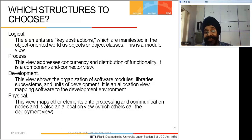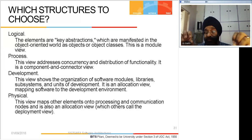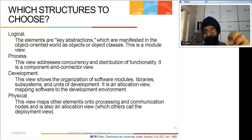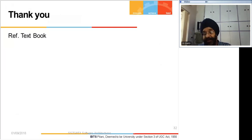The process view covers concurrency, distribution of functionality, and is a component-and-connector type of view. The development view covers how to organize software modules, what the libraries will be, what the subsystems will be, who will be developing, and how to allocate work to various people in the development team. The physical view has to do with applying to physical resources - which communication channels to use, what processes will be there, which servers will be used. These are the 4 important views according to Kruchten at IBM. With that Module 1 is finished and the session closes.